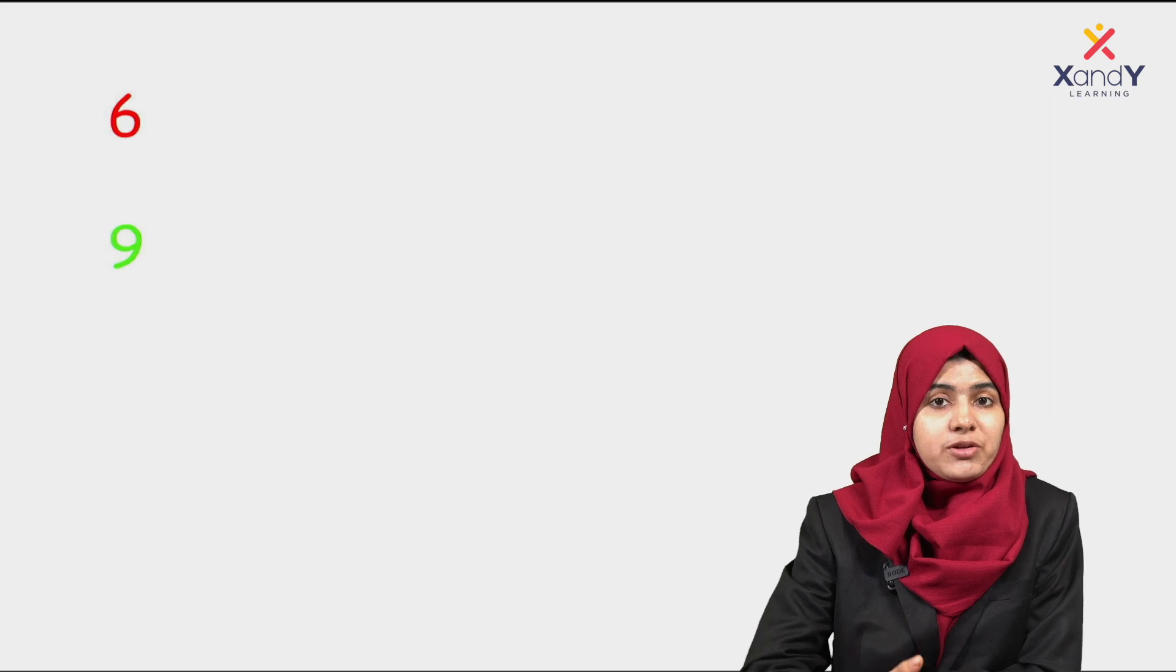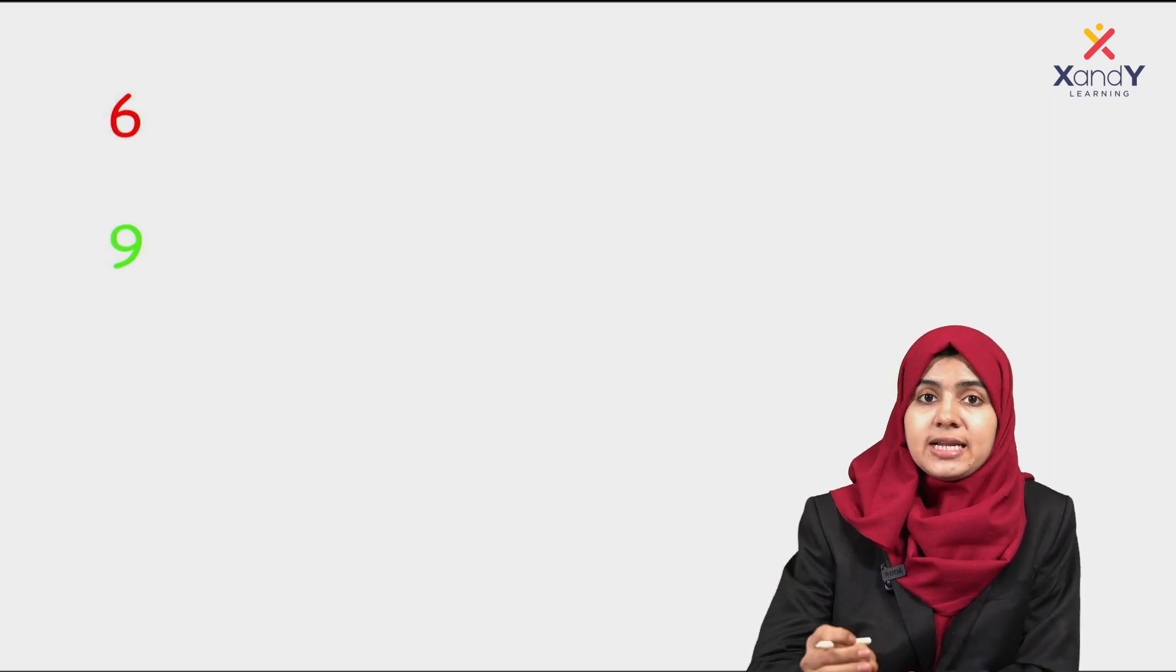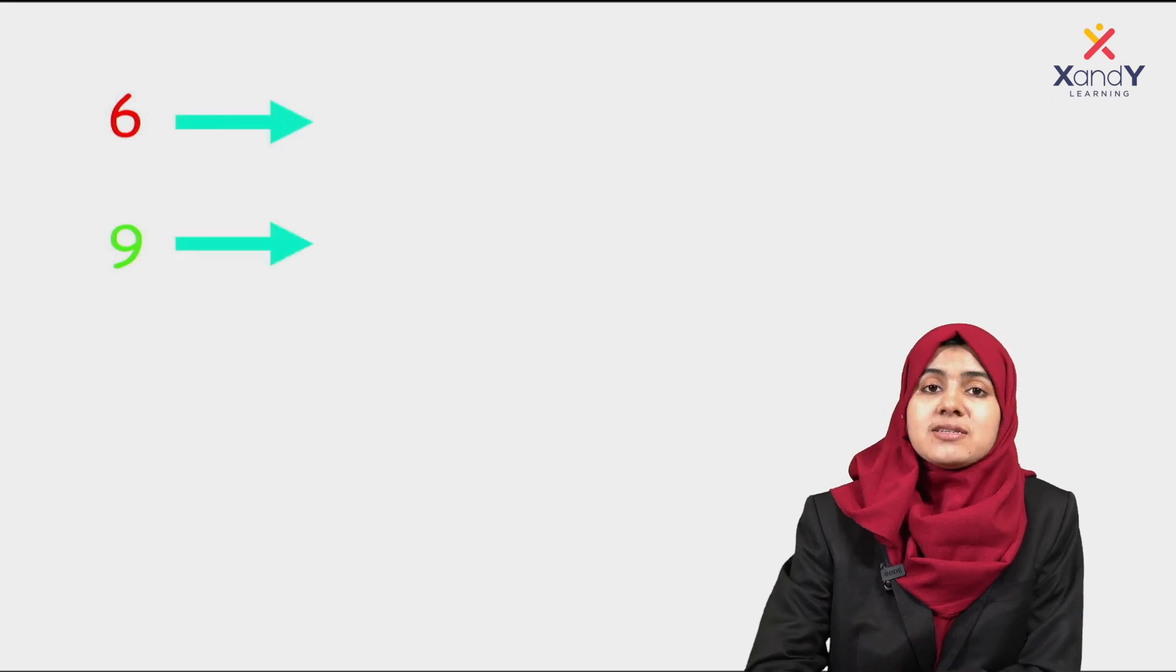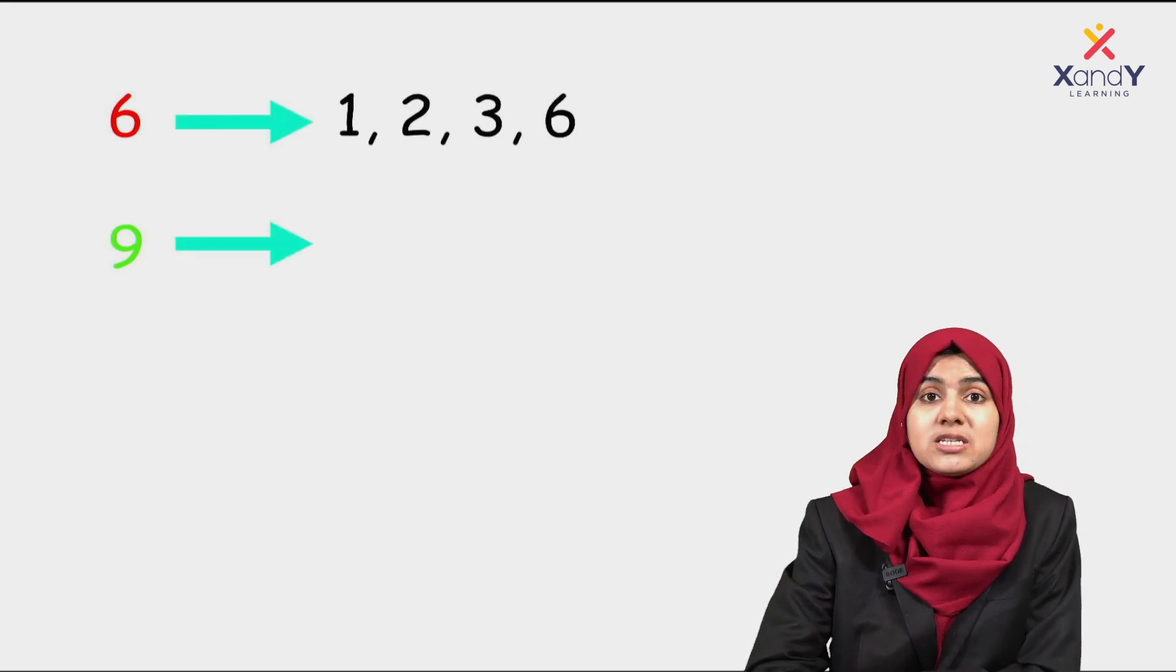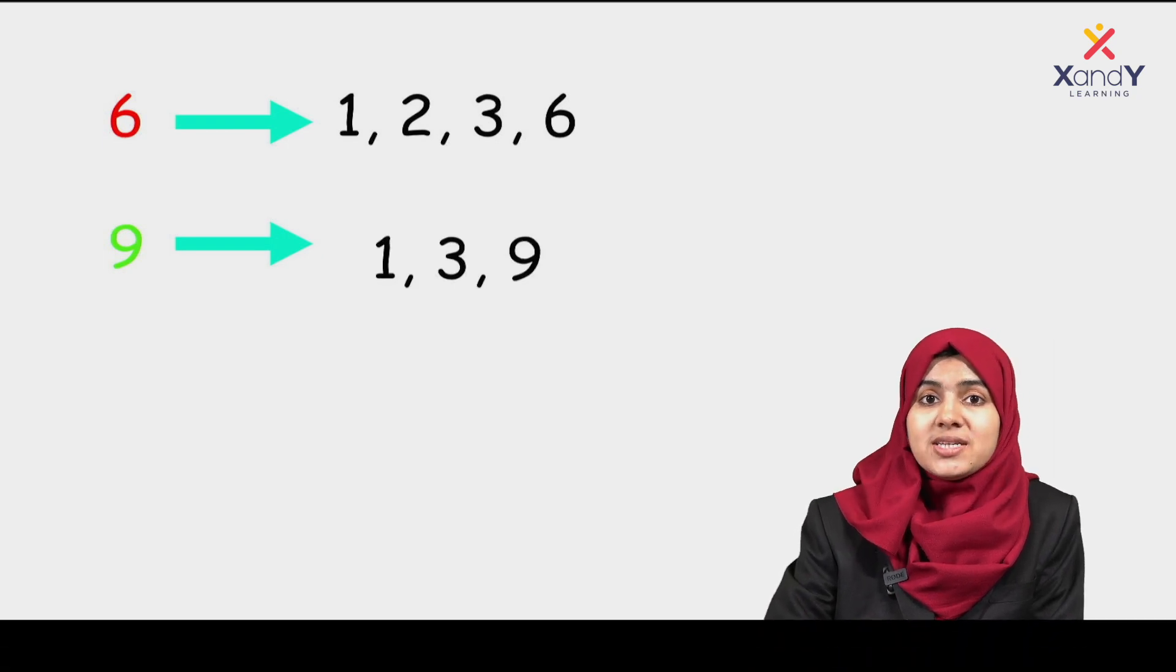So let's take a look at 6 and 9. Let's look at the greatest common factor in detail. So 6, the factors are 1, 2, 3, 6. 9, the factors are 1, 3, 9.